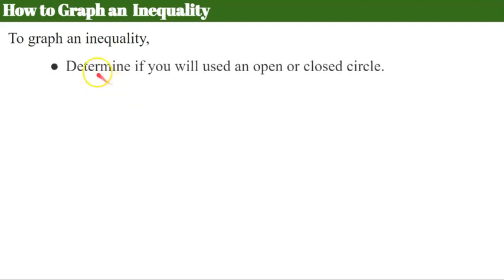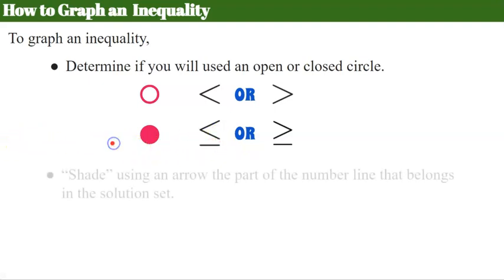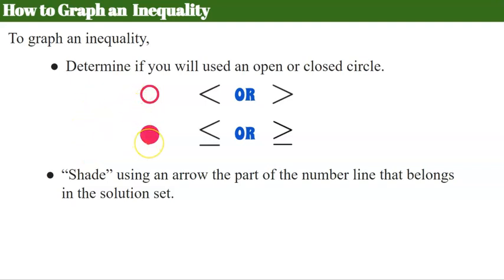Now let's talk about how to graph one. To graph an inequality, you first determine whether you're going to use an open or closed circle. An open circle is used for less than or greater than, and a closed circle is used for less than or equal to or greater than or equal to. A student once told me they remember this because the inequality symbol without the equal sign is open, whereas the one with the equal sign can be closed. Then, after determining open or closed, you shade using an arrow the part of the number line that belongs in the solution set.